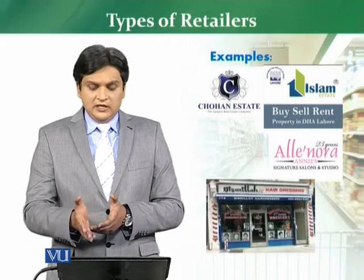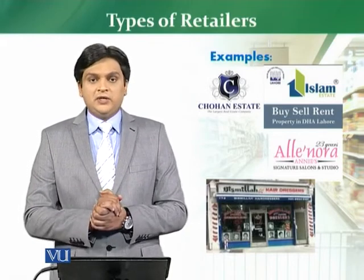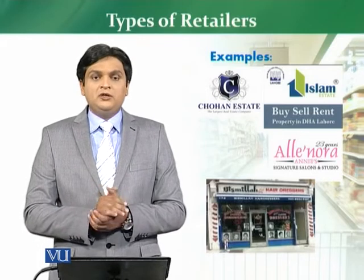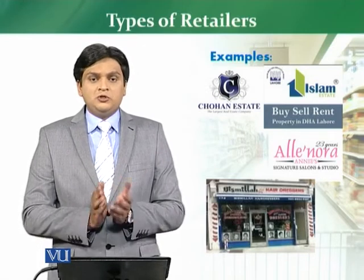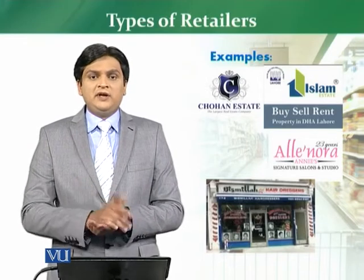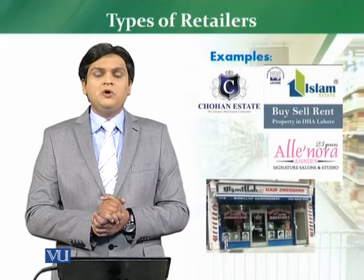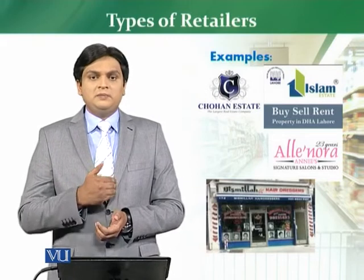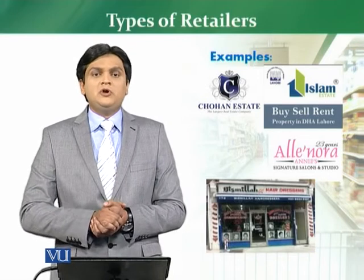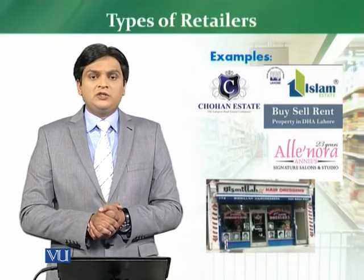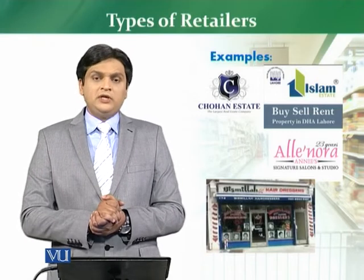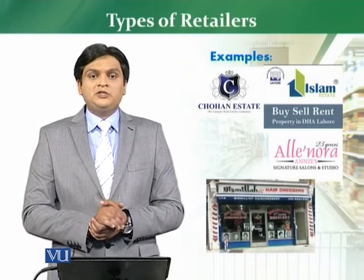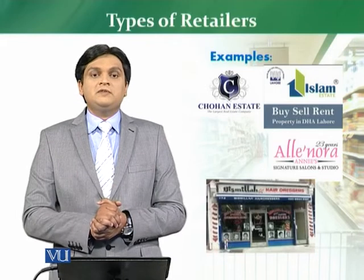Similarly, let me give you some more examples to further clarify this concept. If we look at real estate retailers in terms of personal services, we talk about estate agents — on your screen you can see we have the example of Chohan Estate, a local Pakistani example, which is operating as a chain store and providing personnel services such as buy, sell, and rent to the end user. On the other hand, there is Islam Estate or maybe A-Estate or B-Estate — many such individual estate agencies operating in an unstructured manner and providing services. Similarly, in beauty saloon, we have the example of Elnora, which is one of the renowned names in Pakistan, operating as a chain with structured personnel services.